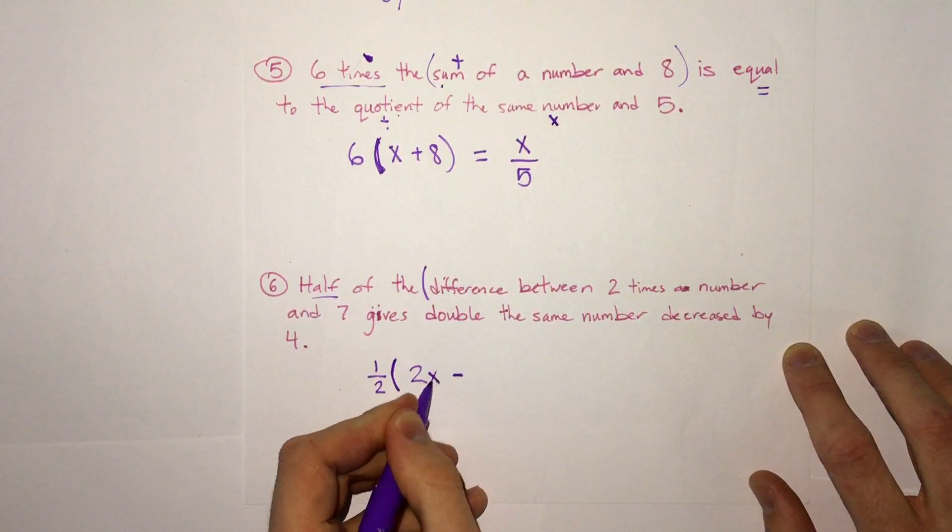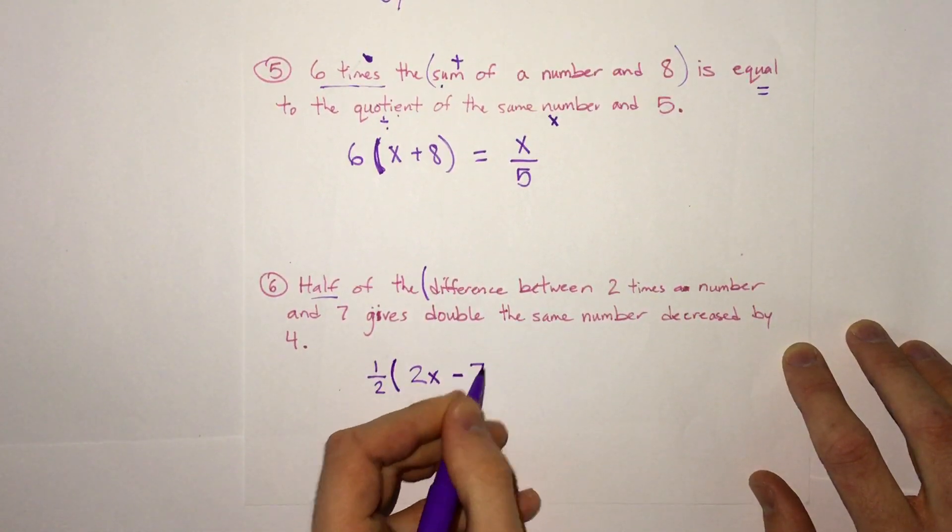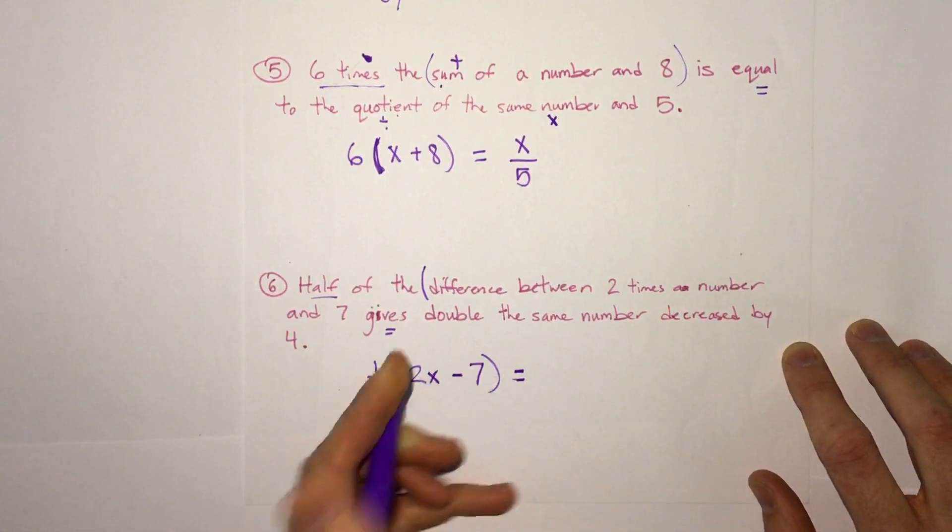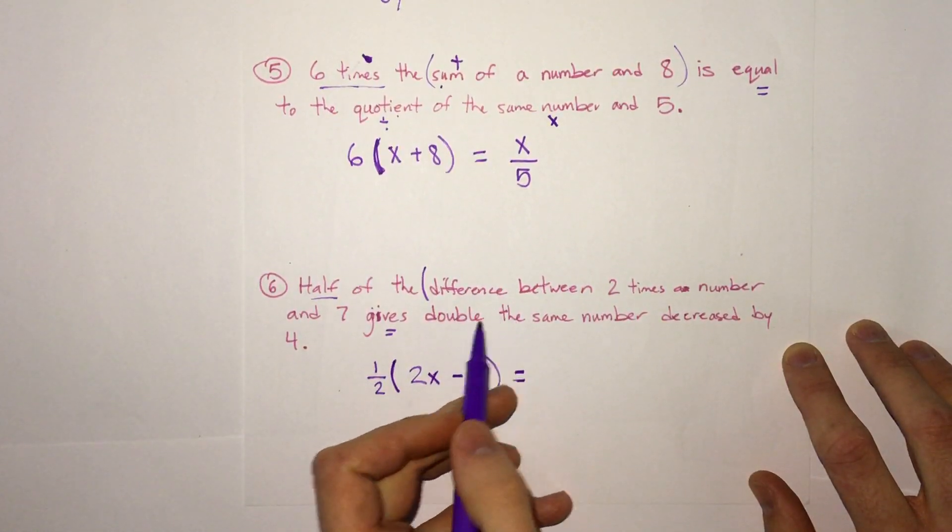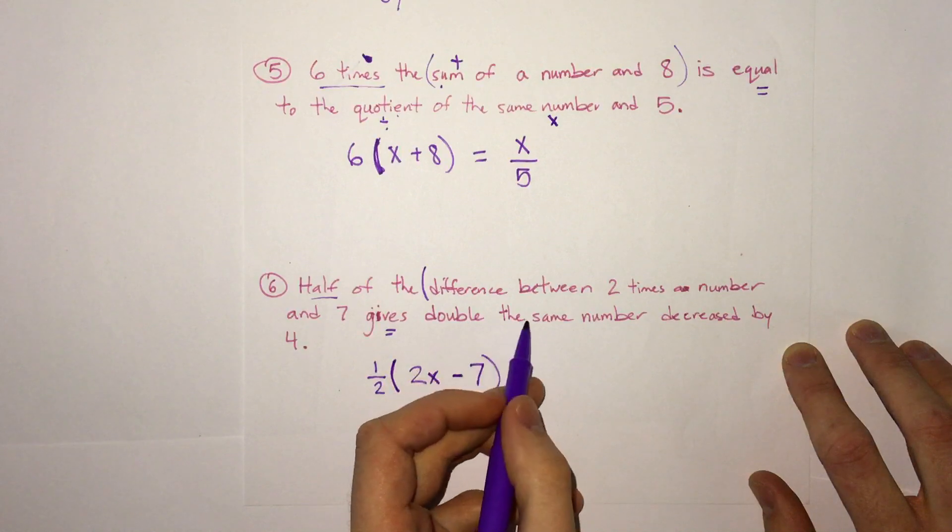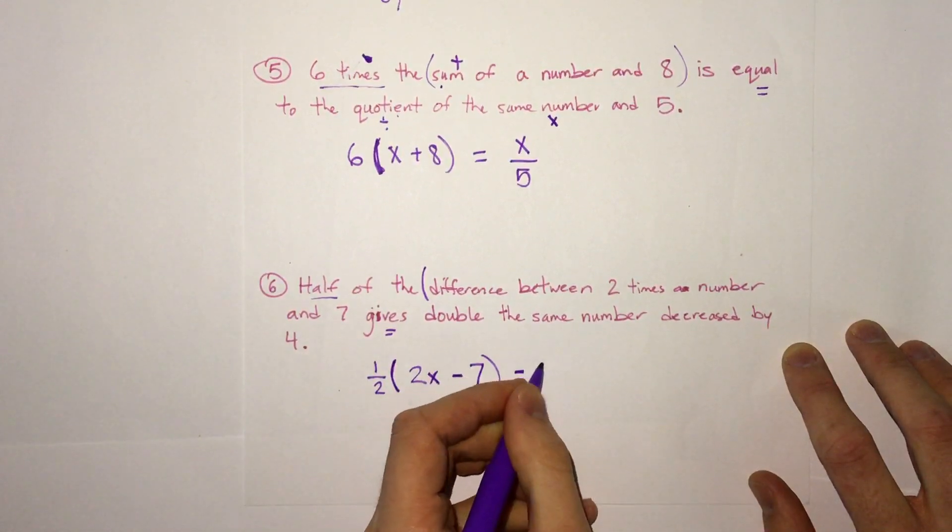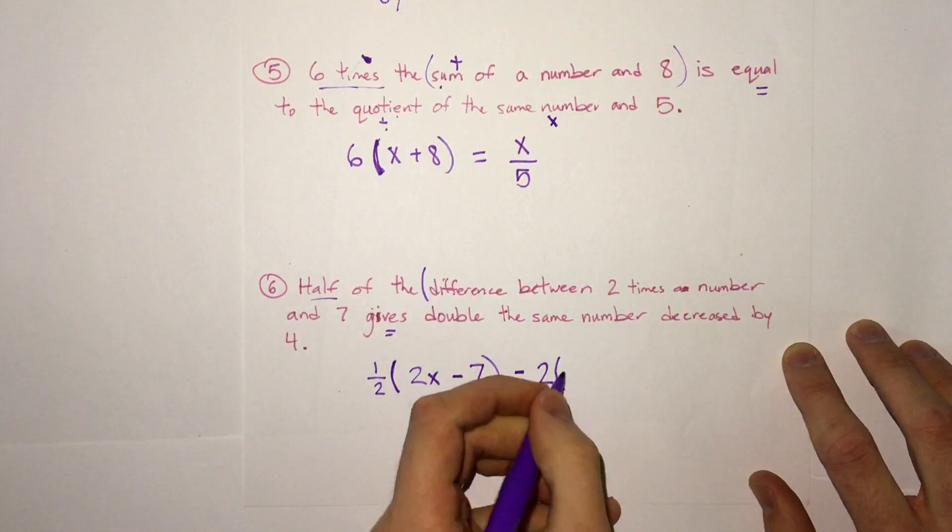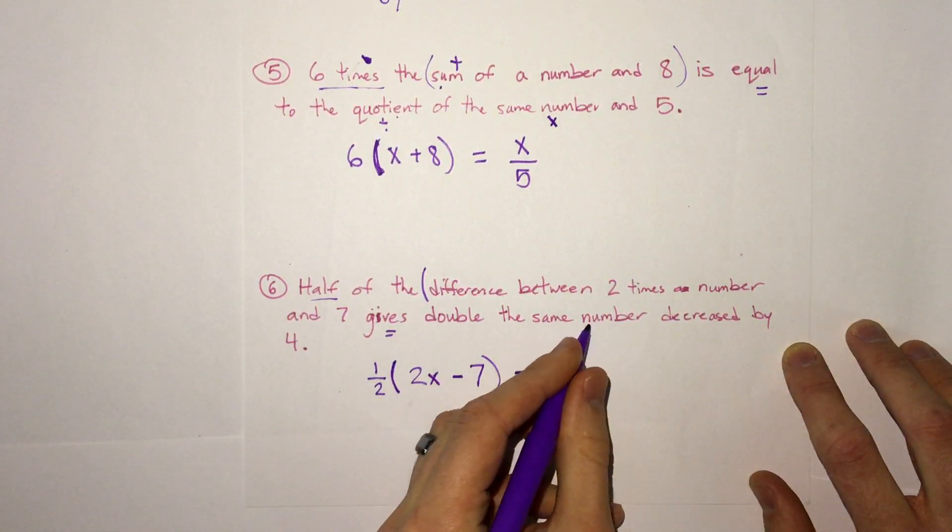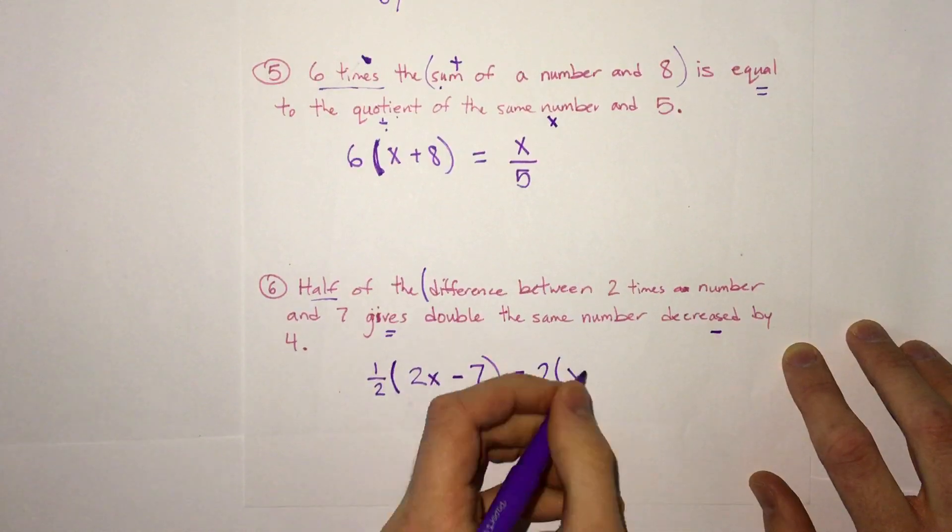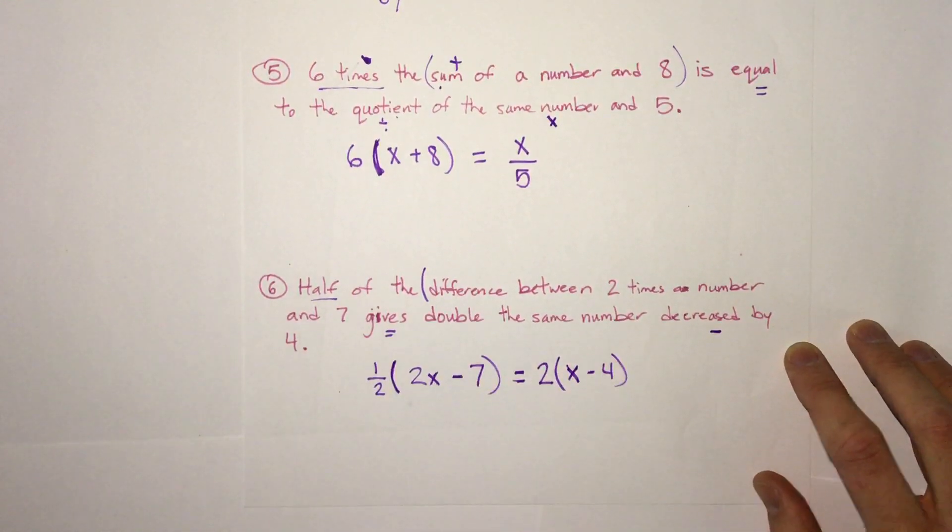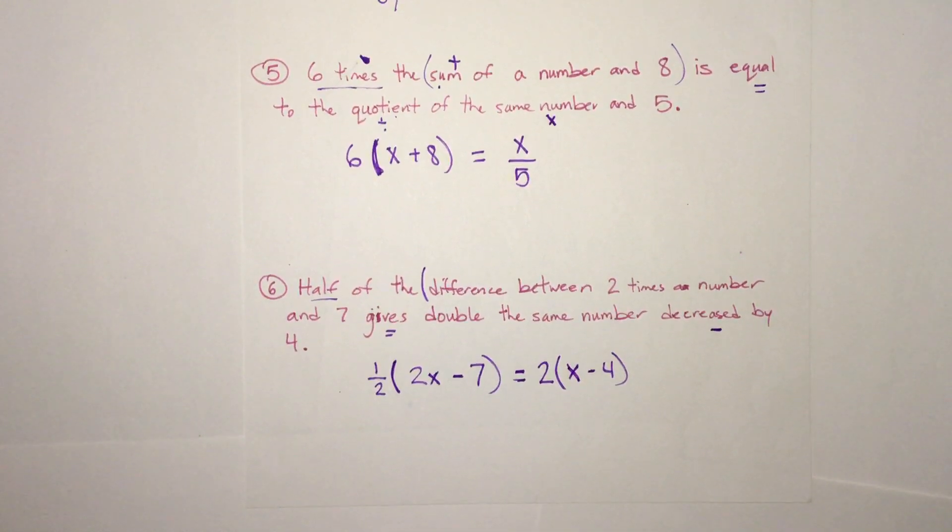So something subtracting between two times a number and seven. So two times a number is 2x minus seven. And then that gives or equals double. So now we're talking about double the same number decreased by four. So now we have double something, double the same number decreased. So decreased by would be minus, two times x minus four. And that would be our equation there.